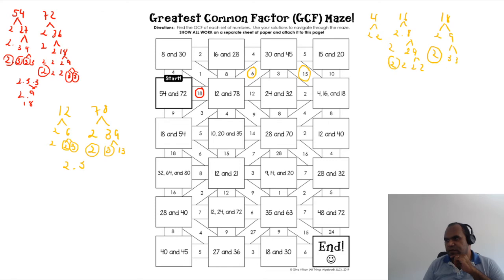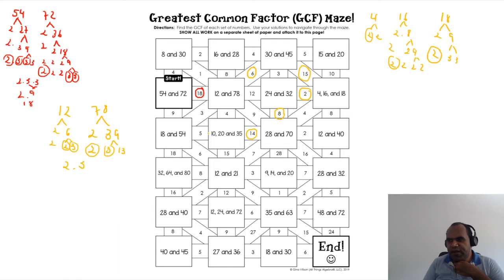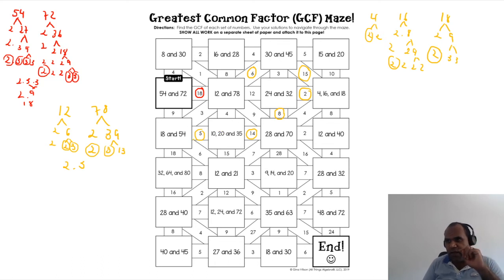For 24 and 32, if you work on these you'll find the same idea — the answer is eight. For 28 and 70, you'll find 14. For 10, 20, and 35, you can see divisibility by five — divide by five and it works. Don't forget to work on the prime factorization. For 18 and 54, you'll find the answer is 18.